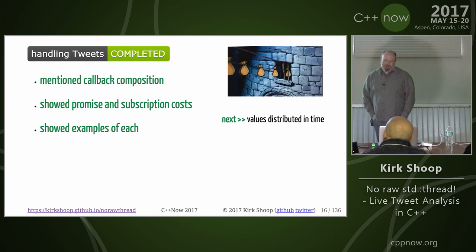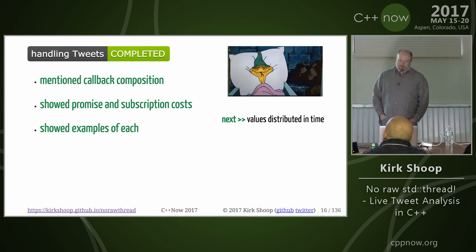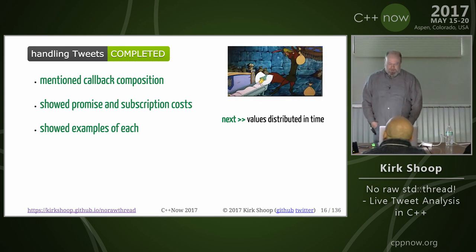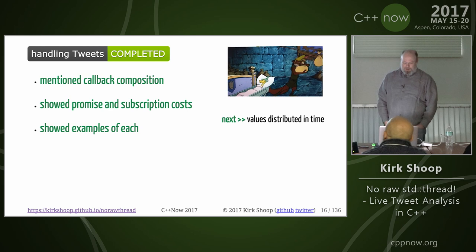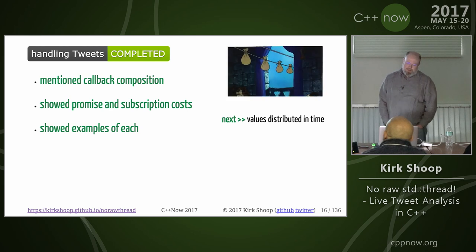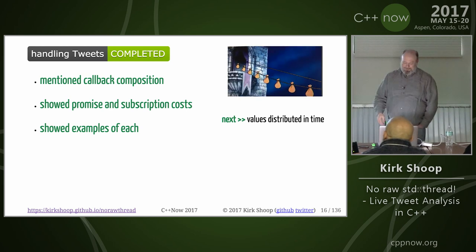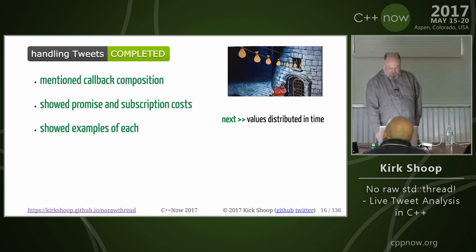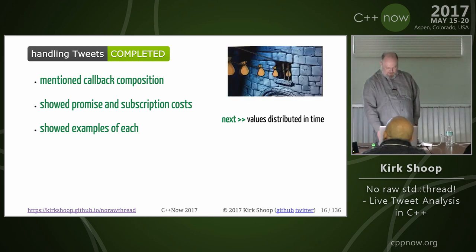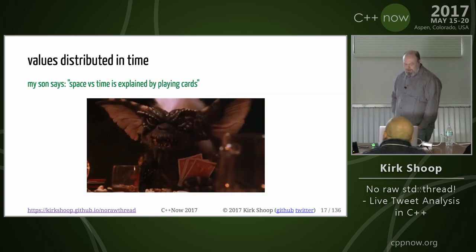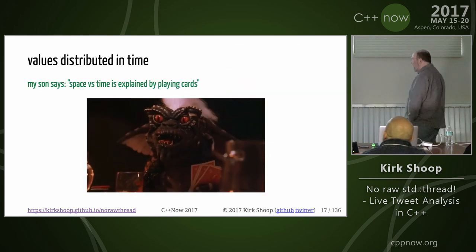Callback composition doesn't work so well. Promises and subscriptions have different costs. So we move on to values distributed in time.